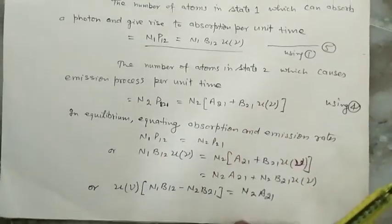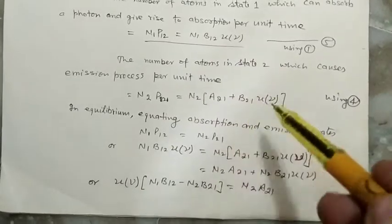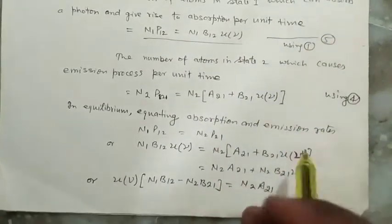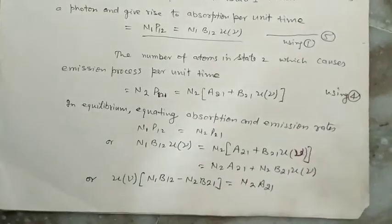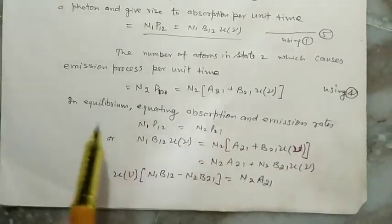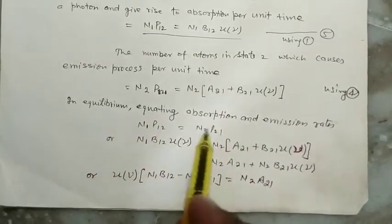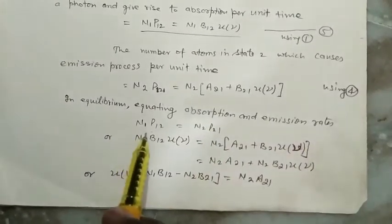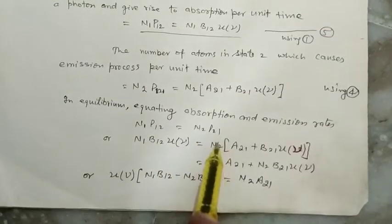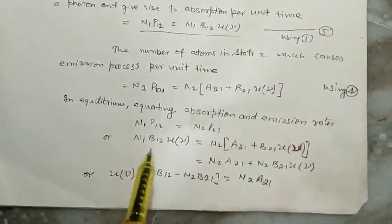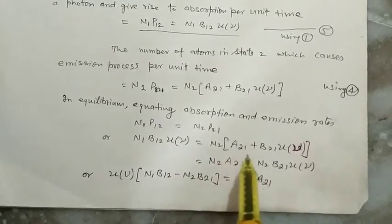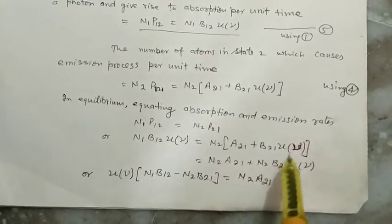Now we equate these numbers of atoms which go from lower to upper or upper to lower in thermal equilibrium. That is, in equilibrium equating absorption and emission rates: N1·B12·U(ν) = N2·P21, or N1·B12·U(ν) = N2·A21 + N2·B21·U(ν).